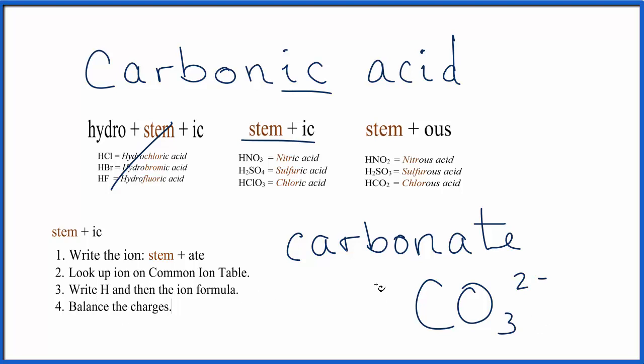Next, we write H in front of that. And then we need to balance our charges. We have this minus 2, that applies to the whole carbonate ion. And hydrogen is always plus 1, it's in group 1. So I'm going to need 2 hydrogens to balance out this minus 2 charge. 2 times the plus 1, that'll give me a plus 2, that'll balance the charges.